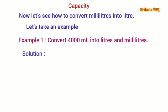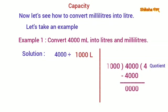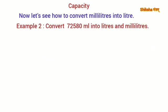To get the solution, 4,000 is divided by 1,000. On dividing 4,000 by 1,000 we get the quotient 4, so 4,000 milliliters is equal to 4 liters.